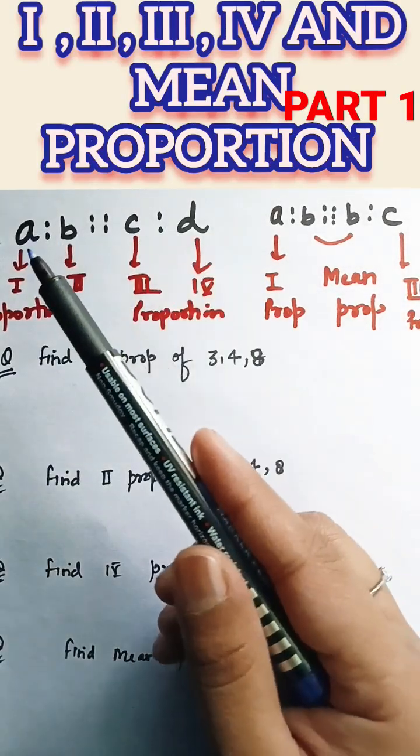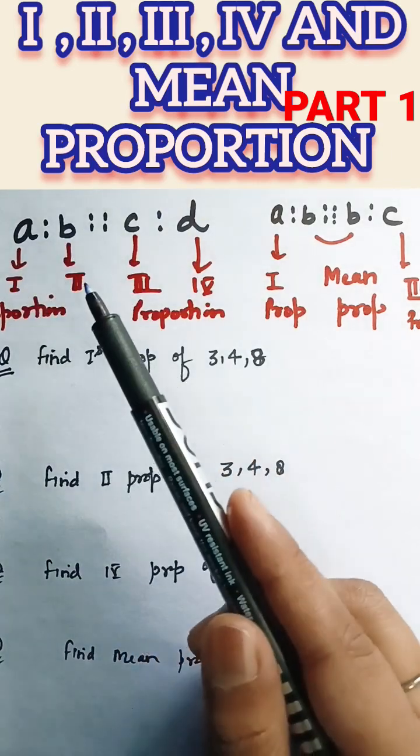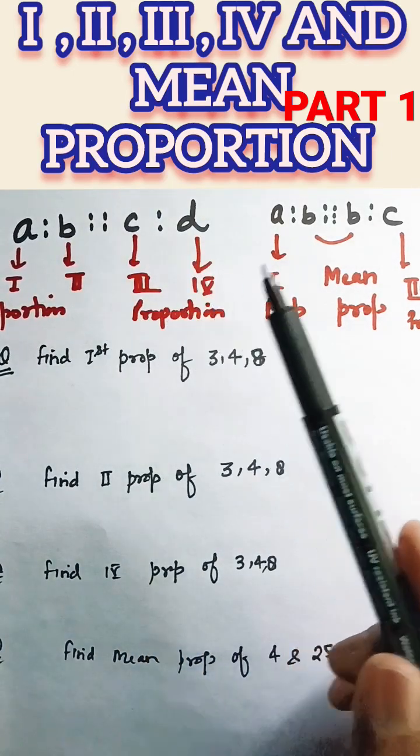So here we will see the proportion trick. If we have A ratio B proportion C ratio D, then A, B are said to be first and second proportion and C and D is said to be third and fourth proportion.